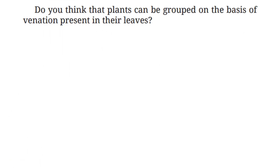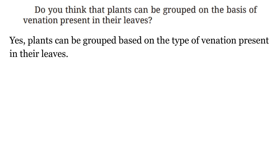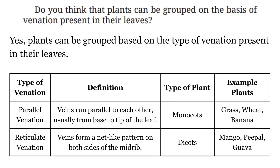So do you think plants can be grouped on the basis of venation present in their leaves? Of course yes — plants can be grouped based on the type of venation. Parallel venation has veins running parallel from base to tip and is found in monocot plants. Reticulate venation has a net-like pattern of veins on both sides of the midrib and is found in dicot plants.